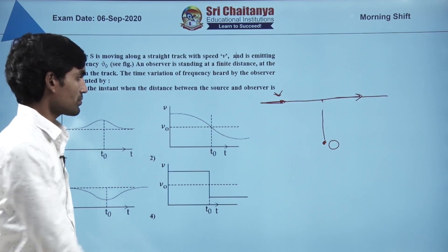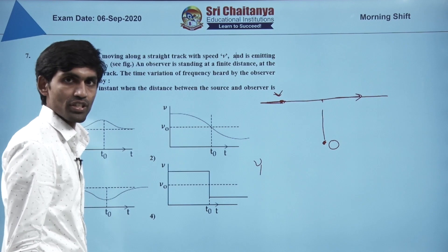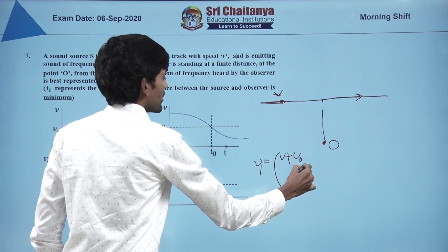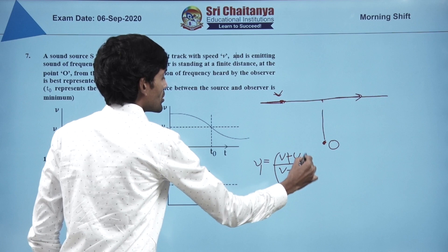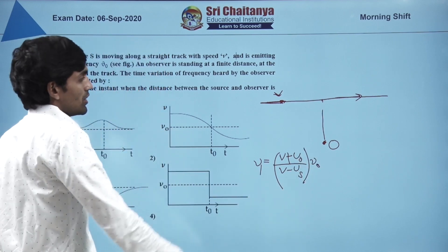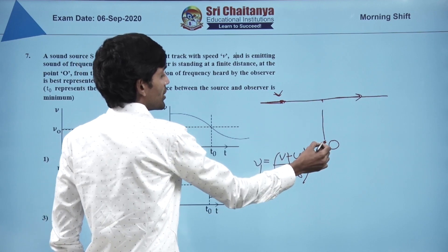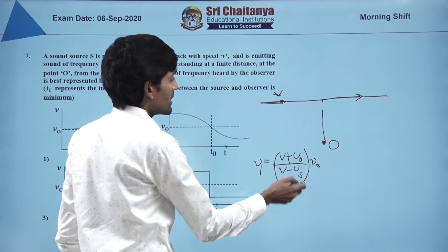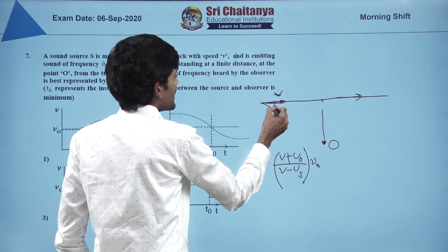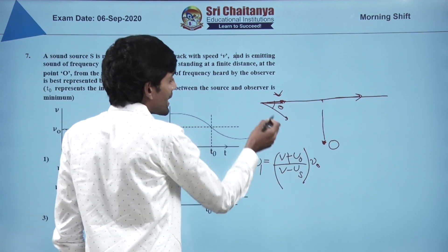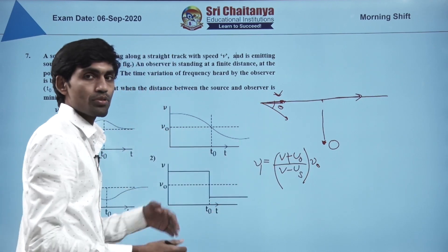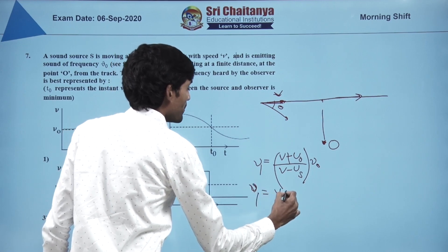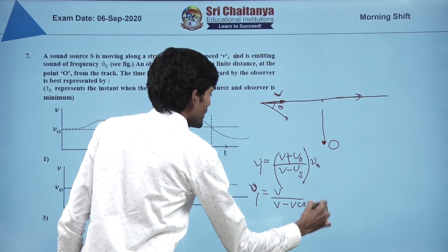Using the Doppler formula: ν' = (v ± v_observer)/(v ∓ v_source) × ν₀. Here v_observer = 0 since observer is at rest, and v_source is not constant — as the source approaches, the component along the observer is v·cosθ. So ν' = v/(v − v·cosθ) × ν₀ when approaching.